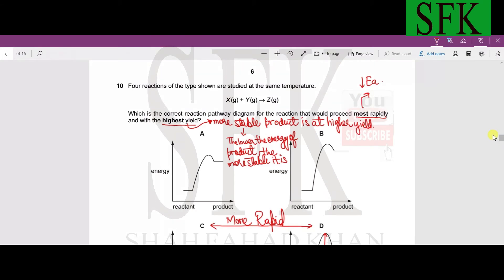This is a good question, question number 10. Four reactions of the types shown are studied at the same temperature. X plus Y forming Z. Which is the correct reaction pathway diagram for the reaction that will proceed most rapidly and has the highest yield? One thing to note is that any reaction would proceed most rapidly if its activation energy is low. Activation energy is by definition the minimum energy needed for a reaction to occur.